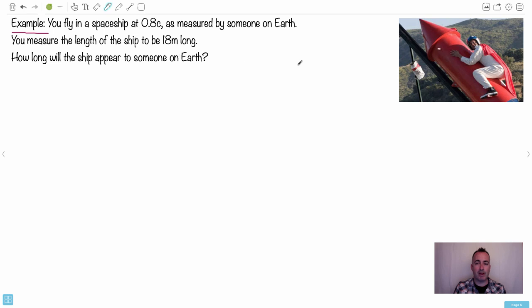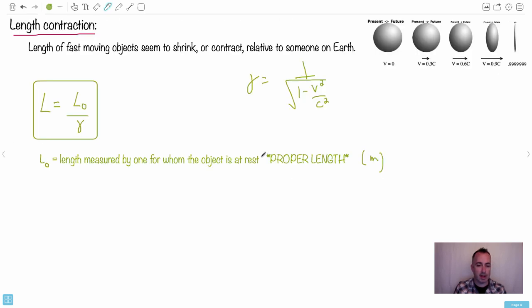So let's do an example of this image of a rocket. So you're flying in a spaceship, and you're going 0.8c as measured by someone on Earth. And you measure your spaceship. So you think your spaceship is 18 meters long. This is you and your spaceship. You measure the spaceship to be 18 meters long. Because you measure that, that is the proper length.